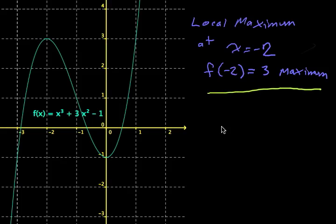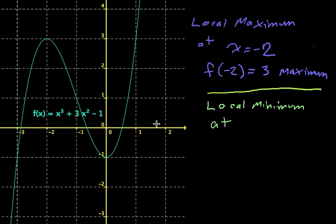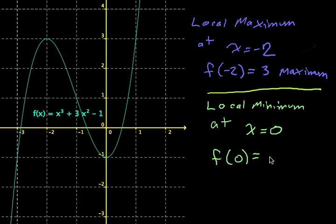Likewise, we can do the same thing with our minimums. We say we have a local minimum — and again, the word 'at' is used to describe the x value. This function has a local minimum at x equals 0, which is the input into the function. We plug 0 into our function: f of 0 gives us the local minimum value. In this case, the function's output is negative 1, so negative 1 is the actual local minimum value.